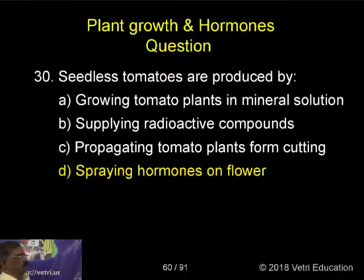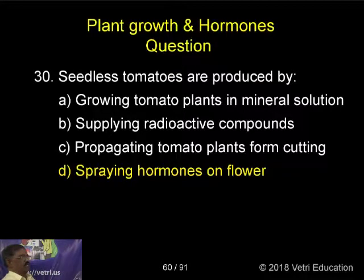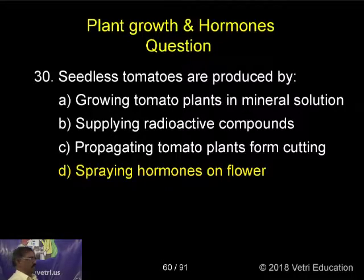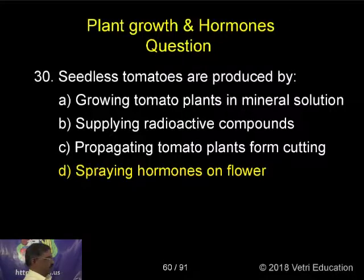Seedless tomatoes are produced by: growing tomato plants in mineral solution, supplying radioactive compounds, propagation of tomato plants from cuttings, or spraying hormones on the flower.